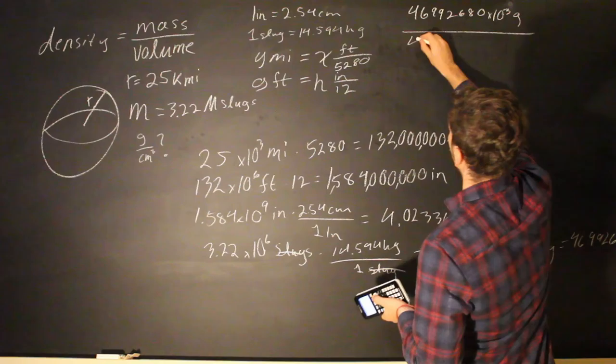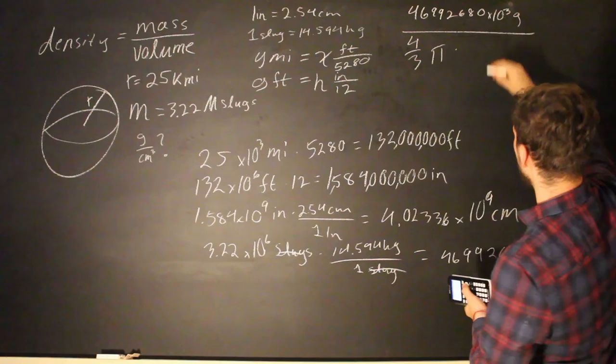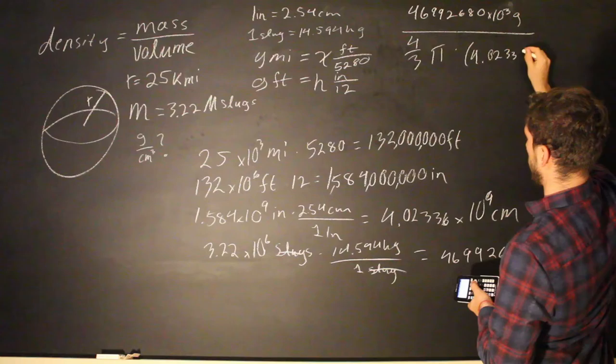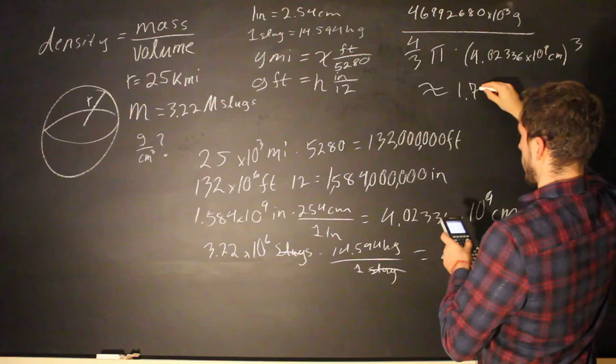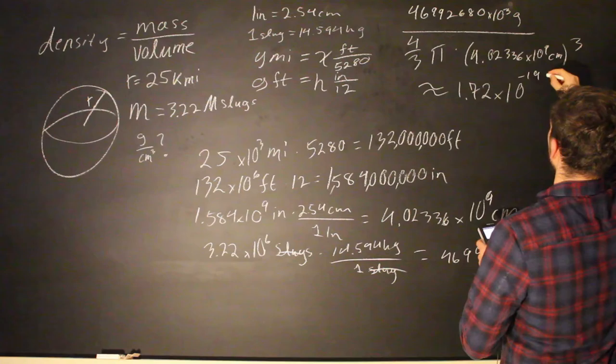And the volume of the sphere is 4/3 pi r cubed. So, 4/3 pi times 4.02336 times 10 to the ninth centimeters cubed, which is going to give us a total of 1.72 times 10 to the negative 19 grams over centimeters cubed.